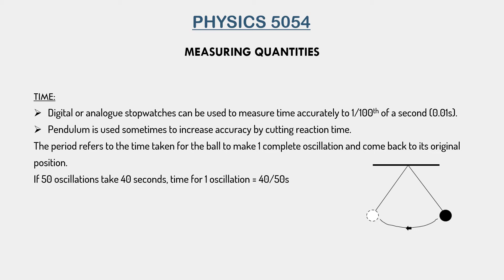The least count of a stopwatch is 0.01 seconds — meaning the smallest possible value a stopwatch can measure is 0.01 seconds. This also means that every value a stopwatch gives is correct to one hundredth of a second. For example, a value a stopwatch can give is 6.73 seconds — as you can see, there are two figures after the decimal point. However, there are certain problems with the use of stopwatches, the most notable being that it adds our own reaction time to the actual time. When we have to start recording, our brain first thinks to start recording, then we manually press the start button — both of these take time.